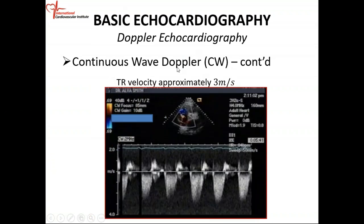Tricuspid regurgitation, similarly: the cursor is right there, short axis at the aortic valve level, cursor across the tricuspid valve, and you're getting flow below the baseline. Therefore, you have a flow moving from the right ventricle across the tricuspid valve into the right atrium — tricuspid regurgitation. It's below the baseline because it's moving away from the transducer. You have to use CW because these velocities, the majority of the time, are greater than 2 meters per second — you have to use continuous wave Doppler.